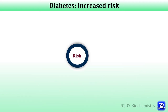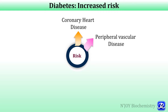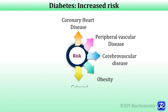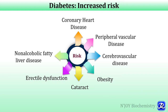People with diabetes are also at increased risk of other diseases including coronary heart disease, peripheral vascular diseases, cerebrovascular diseases, obesity, cataracts, erectile dysfunction, and non-alcoholic fatty liver disease. They are also at increased risk of some infectious diseases such as tuberculosis.